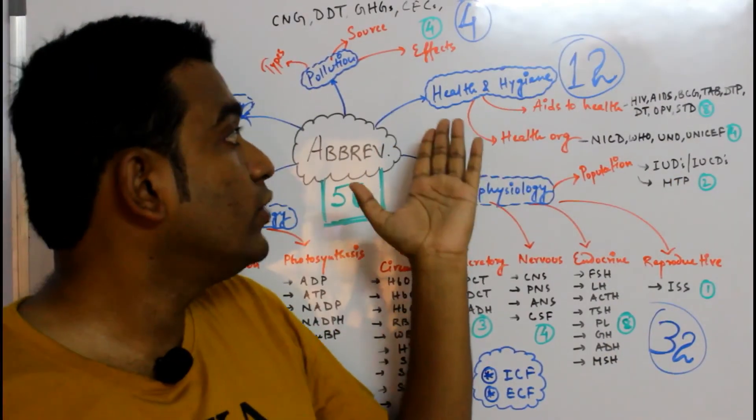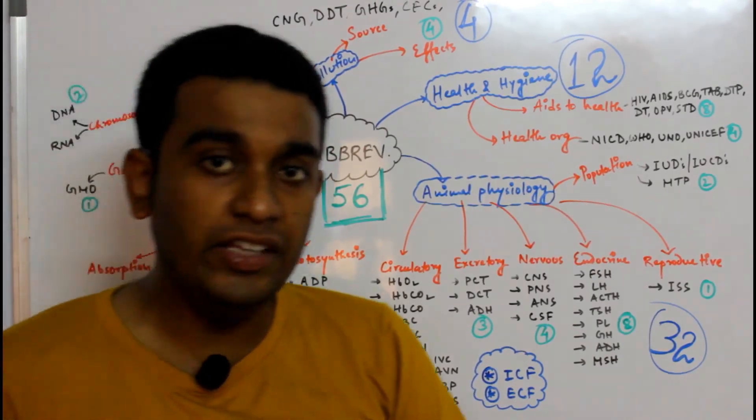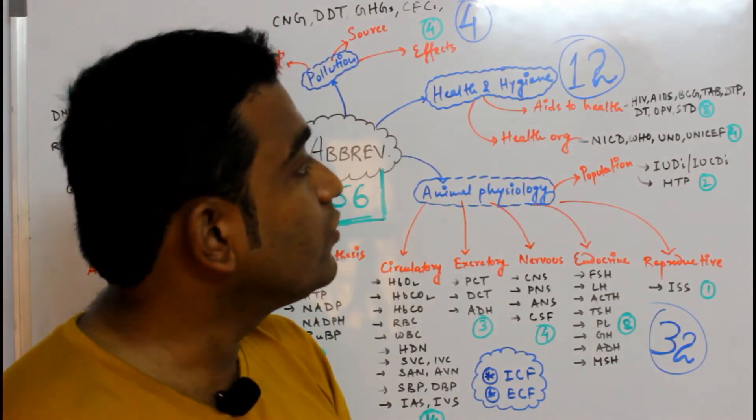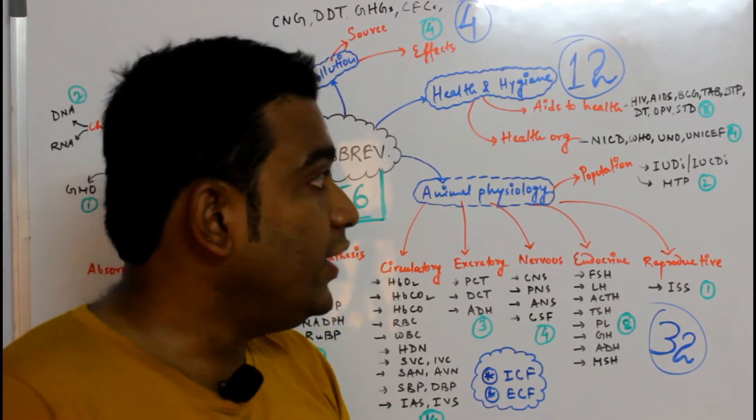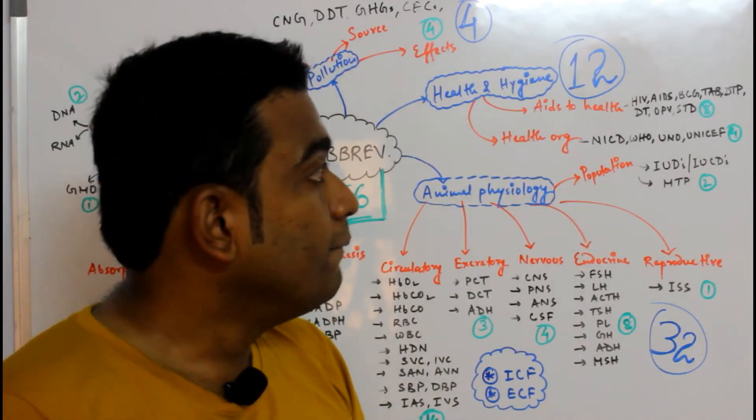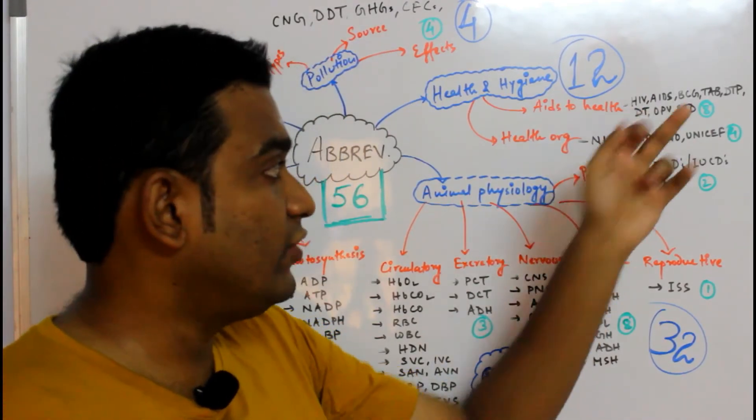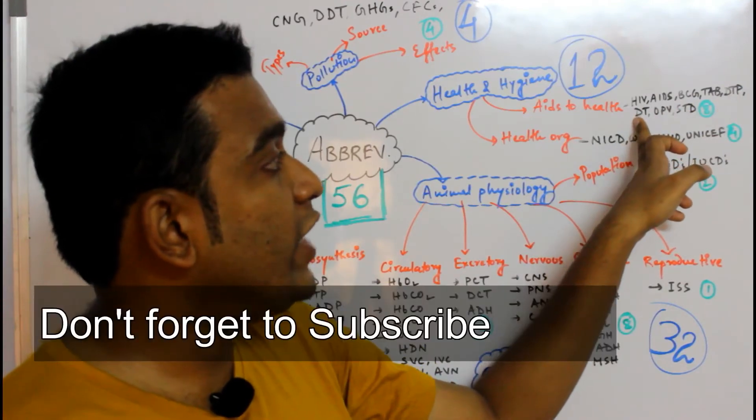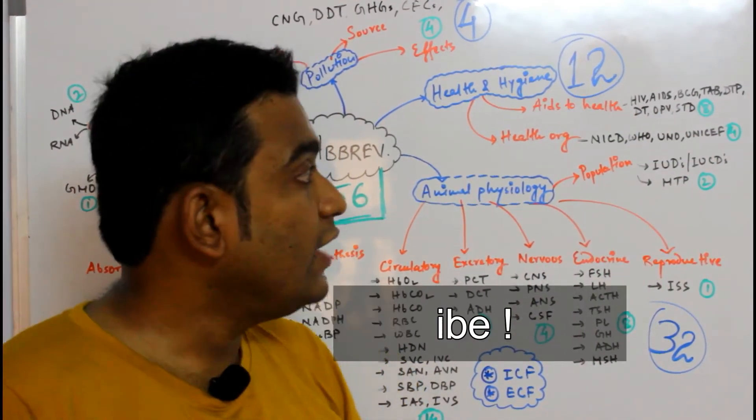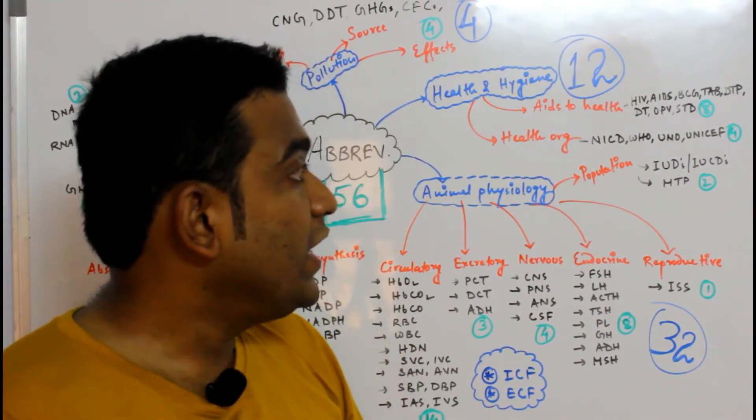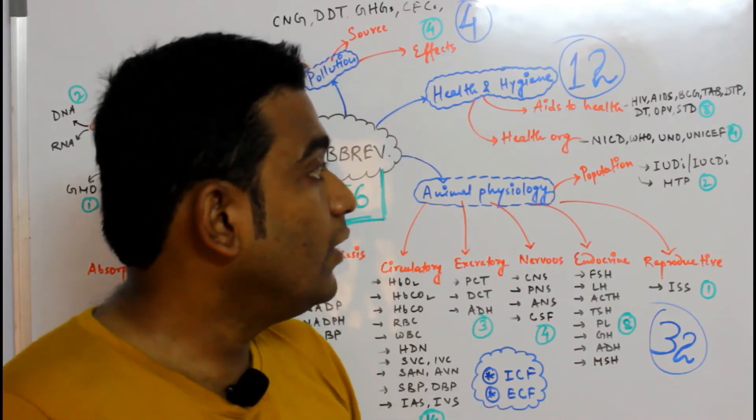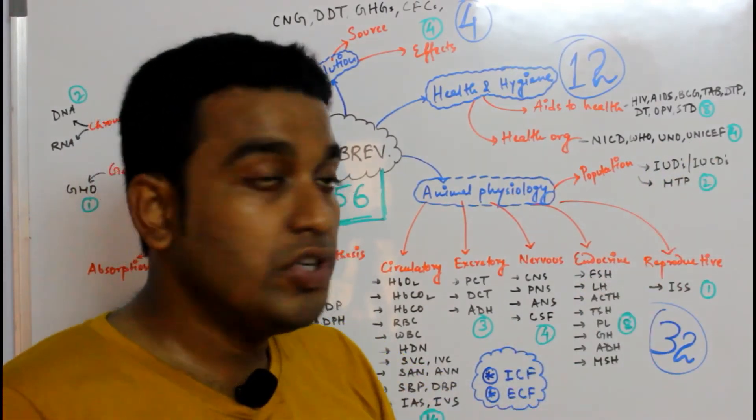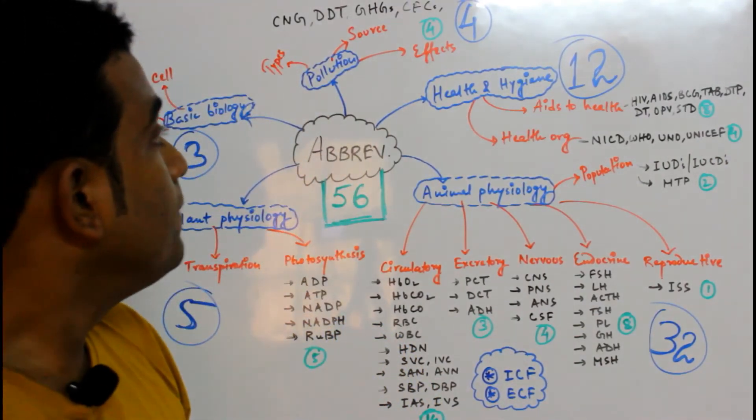Moving to Health and Hygiene, you have two important chapters: Health Organization and AIDS to Health. From AIDS to Health: HIV (Human Immunodeficiency Virus), AIDS (Acquired Immunodeficiency Syndrome), BCG (Bacillus of Calmette and Guérin), TAB (Typhoid Vaccine A and B), DTP (Diphtheria Tetanus Pertussis), DT (Diphtheria Tetanus), OPV (Oral Polio Vaccine), STD (Sexually Transmitted Diseases), NICD (National Institute of Communicable Diseases), WHO (World Health Organization), UNO (United Nations Organization), and UNICEF (United Nations Children's Fund).